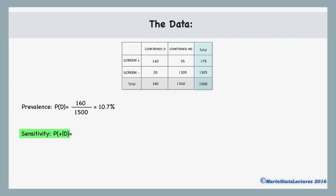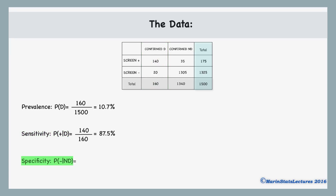The sensitivity is the probability of testing positive given that they have the disease. We can see that 160 individuals have the disease, and of those, 140 tested positive, so the sensitivity is 140 out of 160, or 87.5%. The specificity is the probability of testing negative given that they do not have the disease. We can see that 1,340 people did not have the disease, and of those, 1,305 tested negative, so the specificity is 1,305 out of 1,340, or 97.4%.